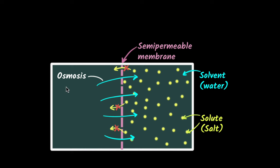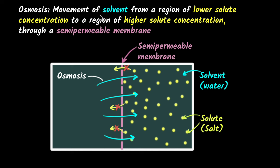And so what is the definition of osmosis? Now we can understand the definition of osmosis. Osmosis is the movement of solvent molecules, you can see solvent water, from a region of lower solute concentration, this was the lower solute concentration, to a region of higher solute concentration. But when does this happen? This happens through a semi-permeable membrane when there is a semi-permeable membrane.